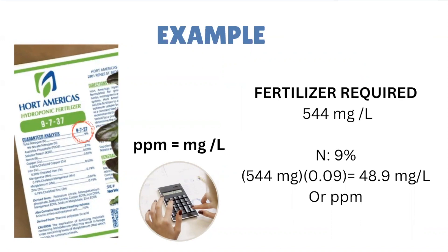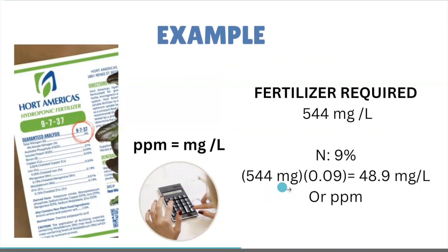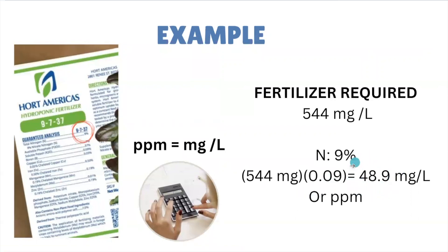To get the total PPM provided by the fertilizer mix, we will need to calculate the percentage shown in the label. For example, for nitrogen in this label from the HortAmericas fertilizer, we have 9% nitrogen. We will calculate 9% of the quantity shown in the instructions. For the HortAmericas fertilizer, the recommendation is to use 544 milligrams per liter — this is already in milligrams per liter, so the conversion was done before starting. We multiply and calculate 9%, finding the total PPM for nitrogen provided by the HortAmericas fertilizer.